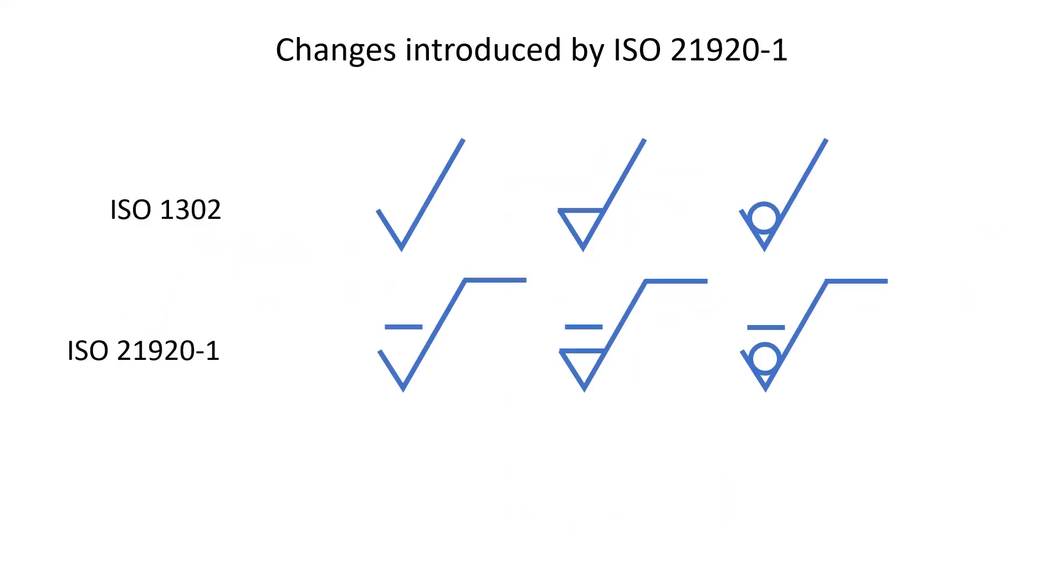The new standard ISO 21920-1, which will soon replace ISO 1302, introduces a modified root symbol with a dash above the triangle to represent a specification on a profile. The top horizontal line that completes the root symbol is now mandatory, while it was optional in ISO 1302.